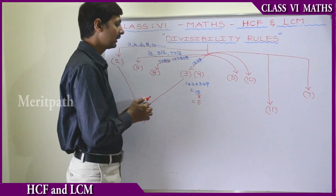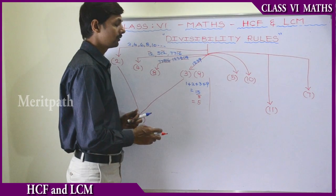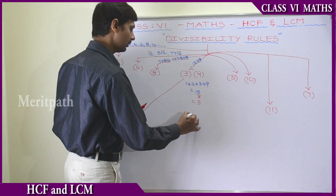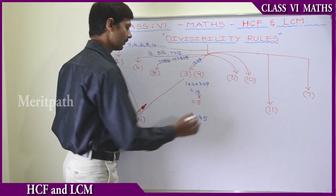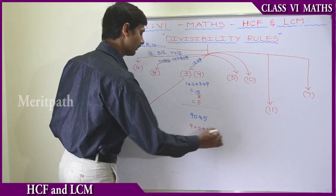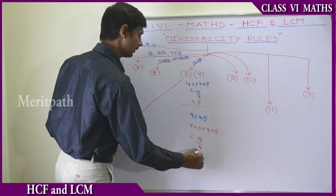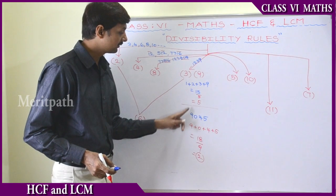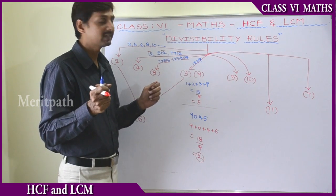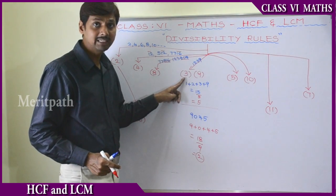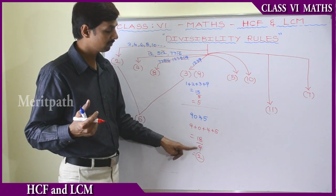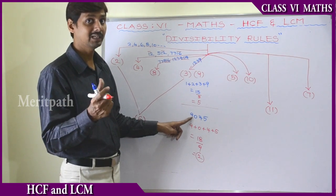For divisibility by 9, the same type of rule is applicable. If the sum of the digits of a number is divisible by 9, then the whole number is divisible by 9. For example, take 9045. The sum of all digits is 9+0+4+5 = 18. Since 18 is divisible by 9, the whole number 9045 is divisible by 9.